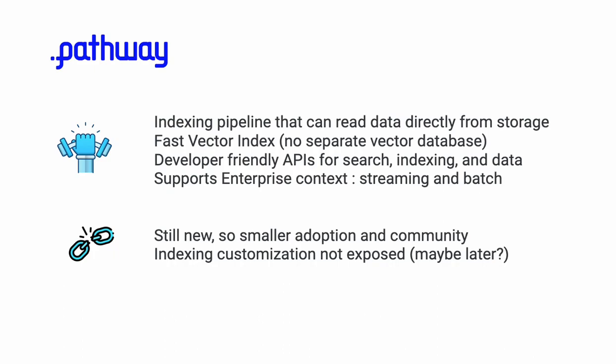Pathway is one interesting platform. It's designed as one of many systems in a pipeline — think of it as a data pipeline. You can have documents in a document pipeline, read directly from storage as a source, get a vector index, and then create your apps on top of it. It's very fast — a very fast vector index. And it's not really a vector database; it's really a vector index.